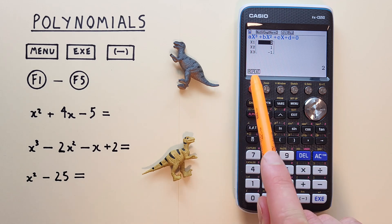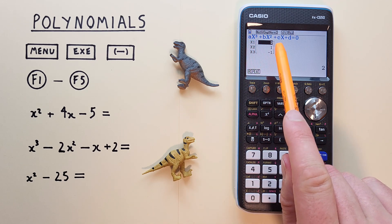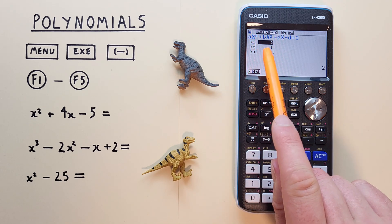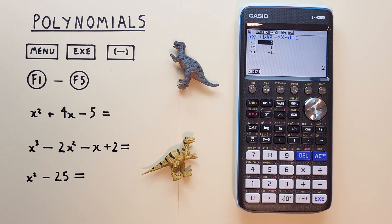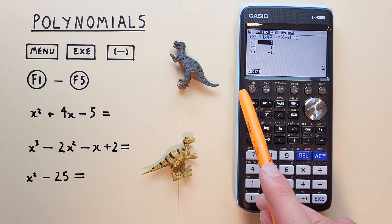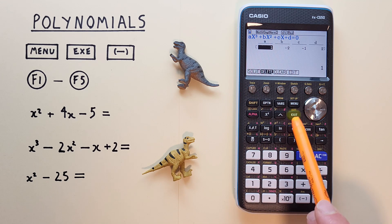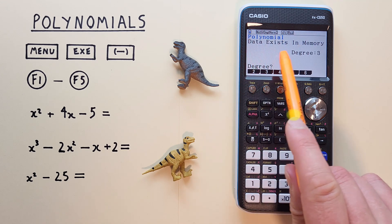And as a result, we get x equals 2, x equals 1, and x equals minus 1. Again, to go back, we can either hit repeat or the exit key. So let's go back to our polynomial menu.